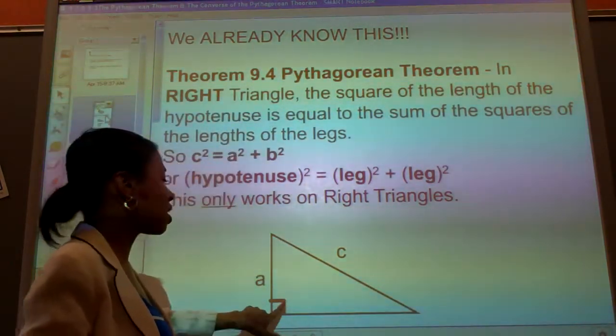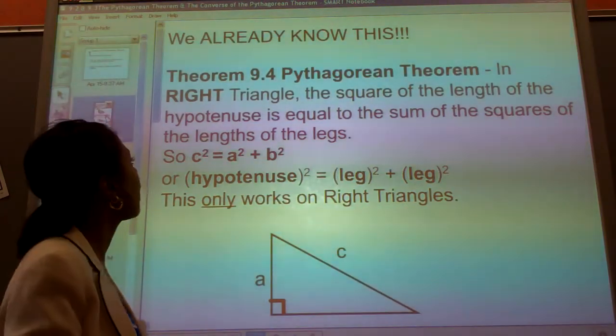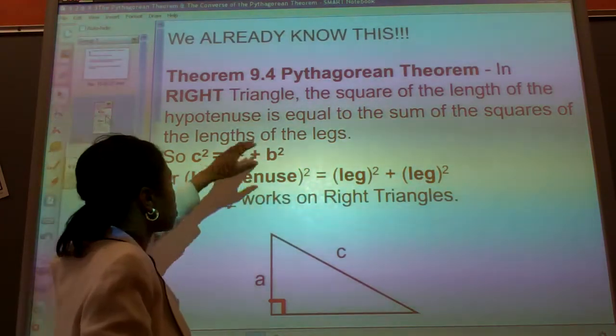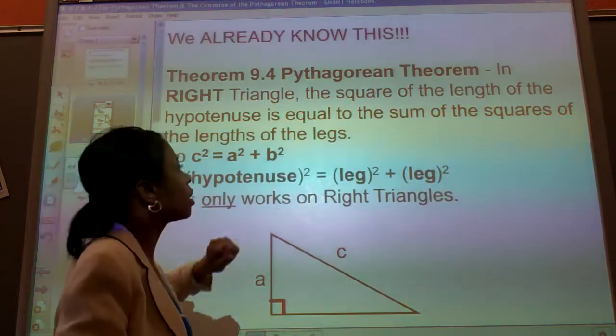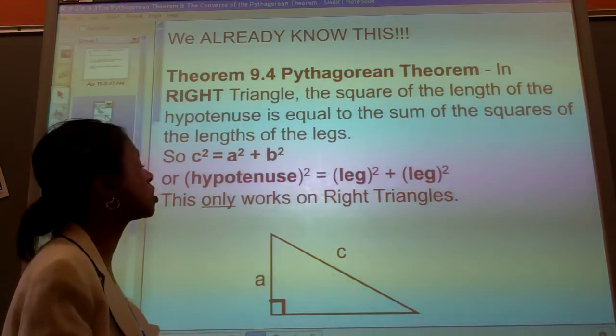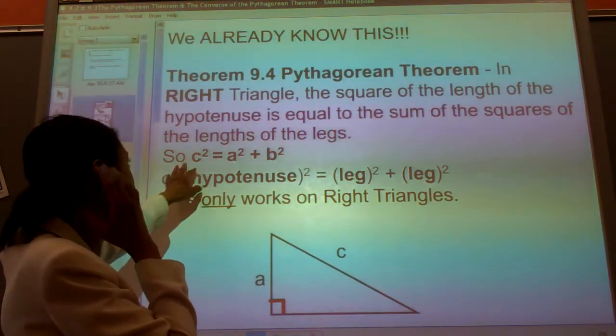In a right triangle, the key word is a right triangle, not a cube, not a two. So in a right triangle, the square length of the hypotenuse is equal to the sum of the squares of the length of the legs. So what does that mean?